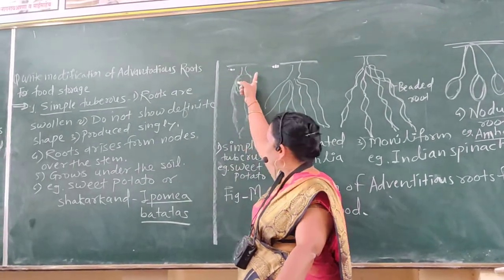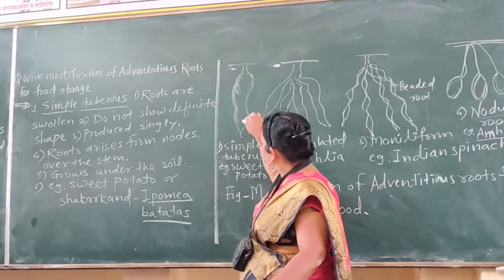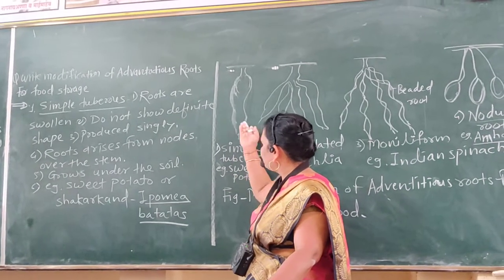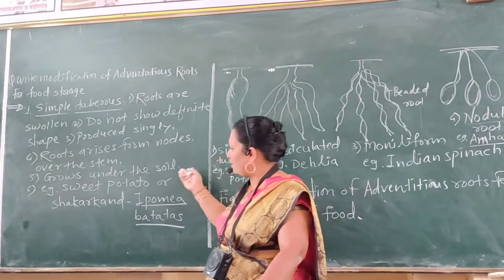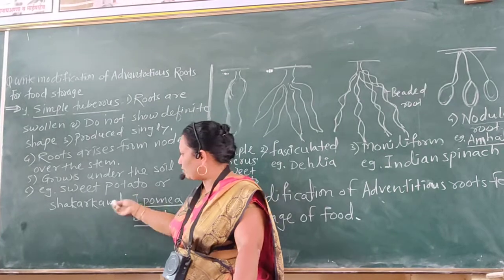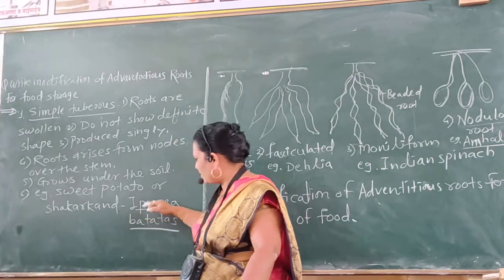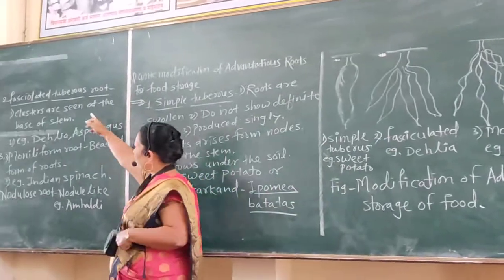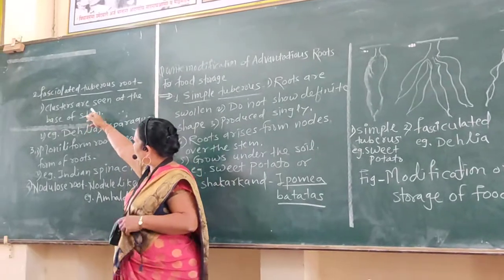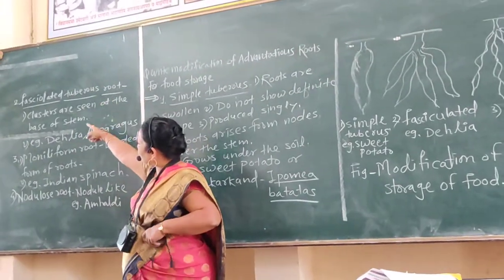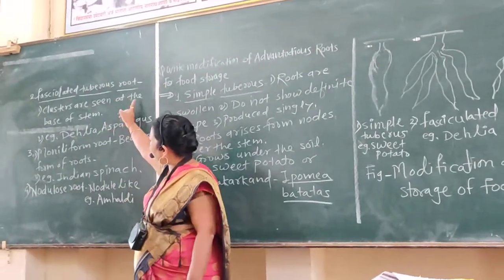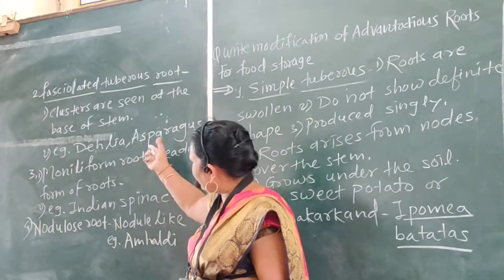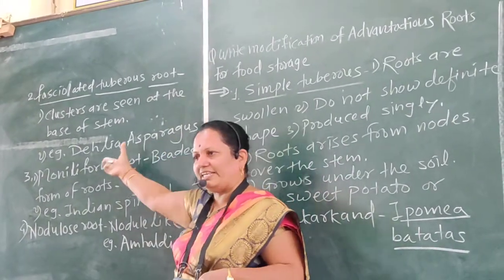Here the simple structure of the simple tuberous root. Example: sweet potato, Shakurkan, or Ipomoea batatas. Next: fasciculated tuberous root — clusters are seen at the base of the stem. Example: Dahlia, Asparagus.